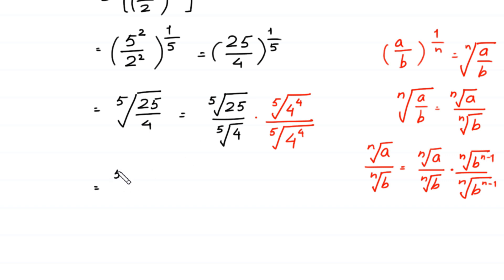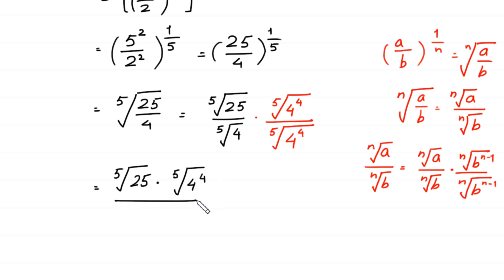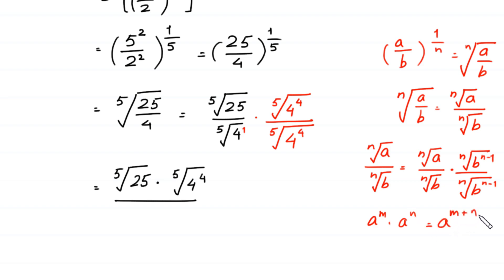This expression becomes the 5th root of 25 times the 5th root of 4 to the power 4, divided by 4. The 4 in the denominator has power 1. According to the property a to the power m times a to the power n equals a to the power m plus n, we add this power 1 and this power 4.